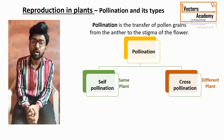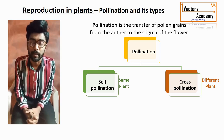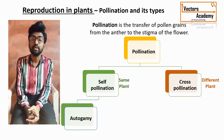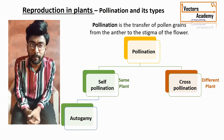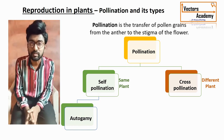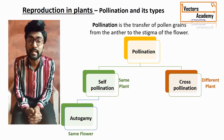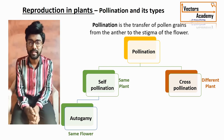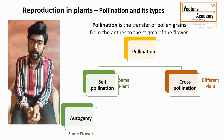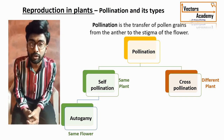Self-pollination is also called autogamy, where 'auto' stands for yourself and 'gamy' stands for marriage. Self-pollination is a type of pollination where there is a transfer of pollen grain from the anther to the stigma of the same flower, generally called autogamy — self-marriage.